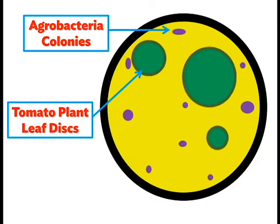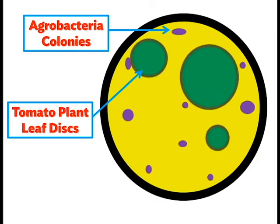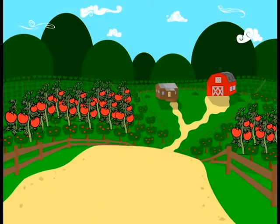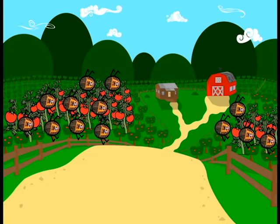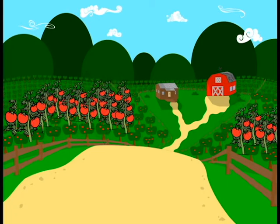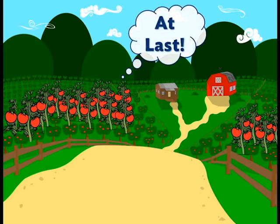Agrobacteria are one of the only known species of bacteria able to naturally integrate their DNA into plants. Now we've created a tomato plant garden that has both the crygene and, more importantly, the property of insecticide.